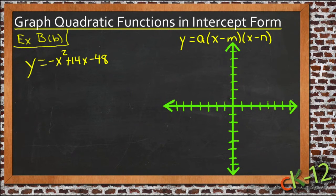So let's review it real quick. We have the standard intercept form right here, y equals a times x minus m times x minus n. And what that means is just that we're taking y and we're going to set it equal to two binomials multiplied together, perhaps with a coefficient before them and perhaps not. Sometimes there's one there and sometimes there isn't.